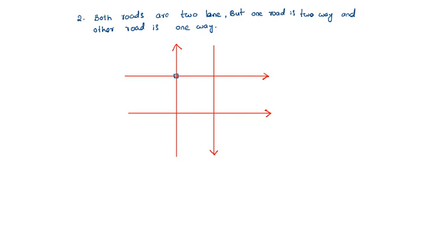Cross conflicts are four in number: one, two, three, four. Now left-going traffic — left-going is only here and here, giving conflicts five and six. Left-going produces only two conflicts.